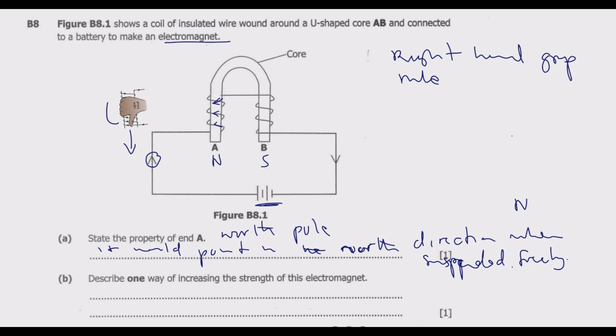Then B: describe one way of increasing the strength of this electromagnet. We are only required to mention one, but I'll give you two. The first one is by increasing the current through the circuit. If we increase the current flowing in this circuit, we increase the strength of the electromagnet.